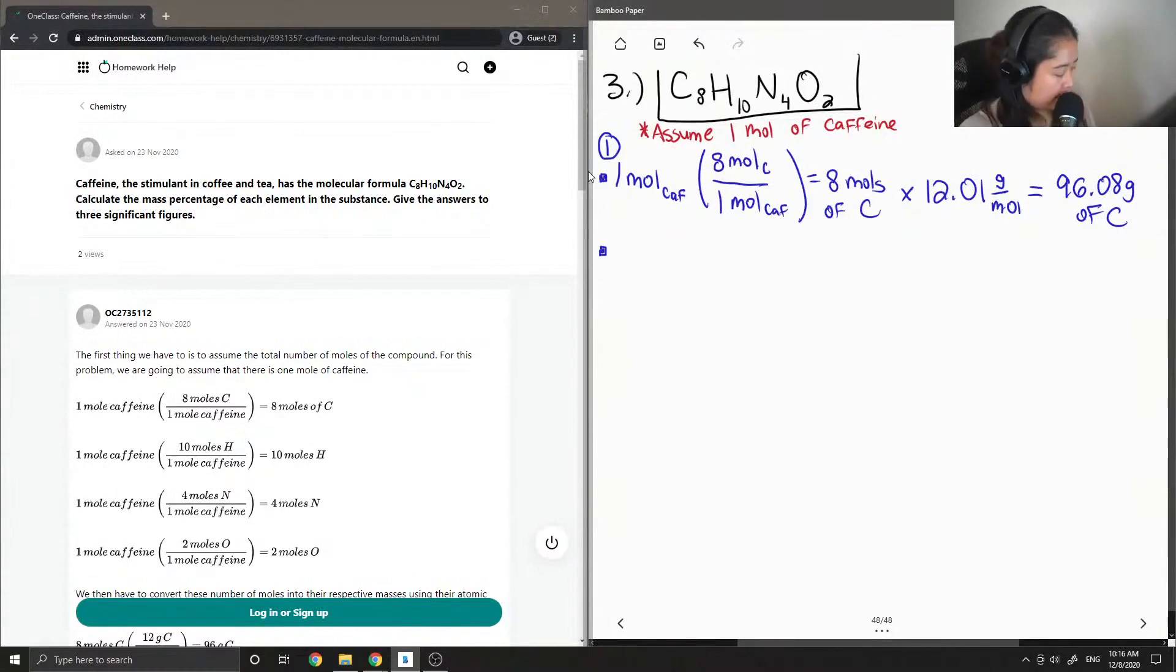Okay, so we can do the same thing. Let's move on to hydrogen. We know we have 10 moles of hydrogen. We're going to multiply this by hydrogen's atomic mass, which is 1.01 grams per mole, to give us 10.1 grams of hydrogen.